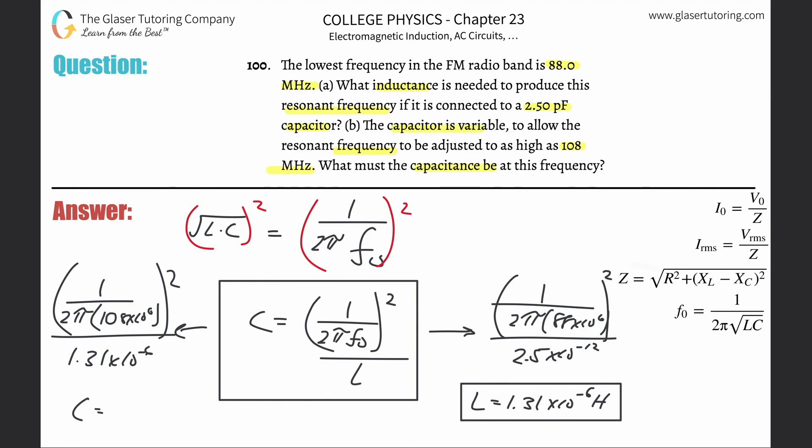So this is just 1 divided by parenthesis 2π times 108 times 10 to the sixth. Get an answer and then square it. Then divide that by that exact answer from before. And I get a 1.66 times 10 to the minus twelfth. So that's 1.7-ish, right? Picofarads, but I'm going to leave it in terms of farads. There you go, guys.